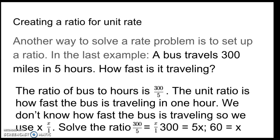So, 300 equals 5x. Divide both sides by five. 300 divided by five is 60. So, it gives us 60 miles an hour again.